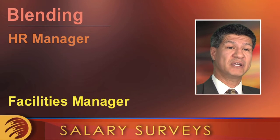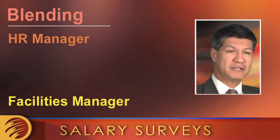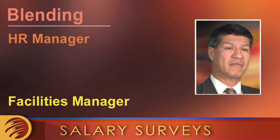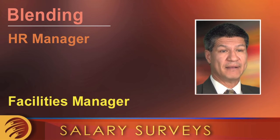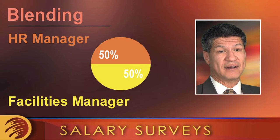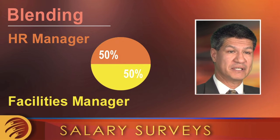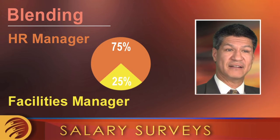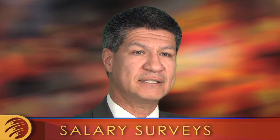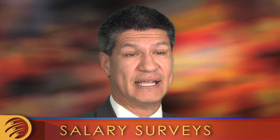We can do one of two things. We can do a blending approach where we look at the job and ask: how much of this job is HR manager work, and how much is facilities manager work? We use the same technique of weighting. If those are equal, we would provide 50% weighting on the HR manager match and 50% on the facilities match. Maybe it's only 25% facilities and 75% HR — then we just adjust the weights accordingly.